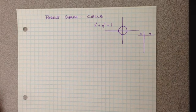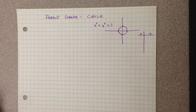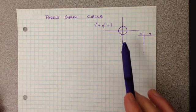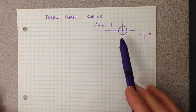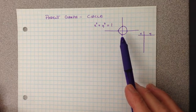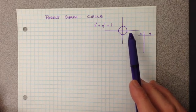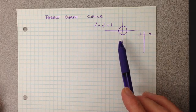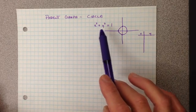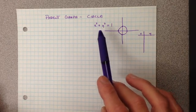Today I want to talk to you about a different parent graph, specifically the parent graph of a circle. You can see my circle drawn right there, and I do understand that that is a pretty horrid circle. I should have used a compass, but hopefully you get the idea and make the assumption that that is actually a circle. That is based off this mother equation right here.